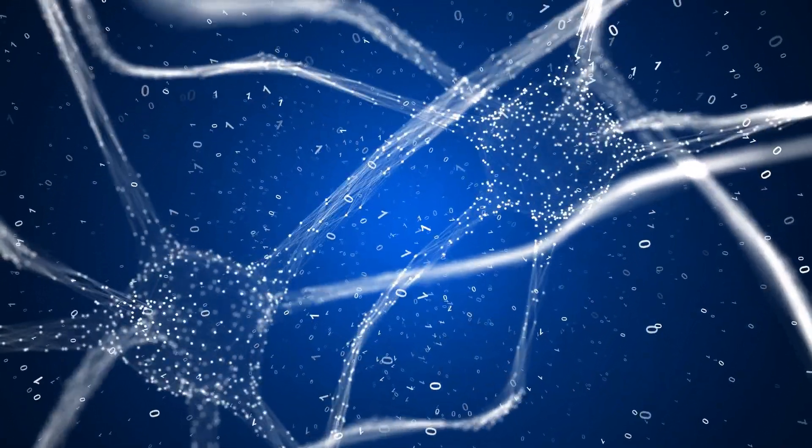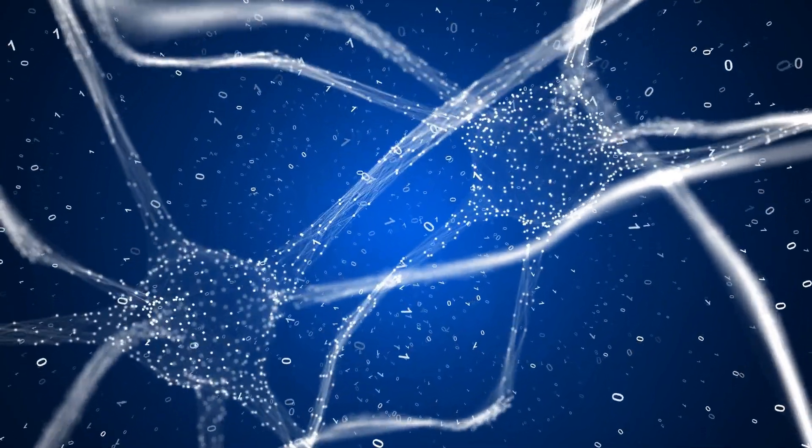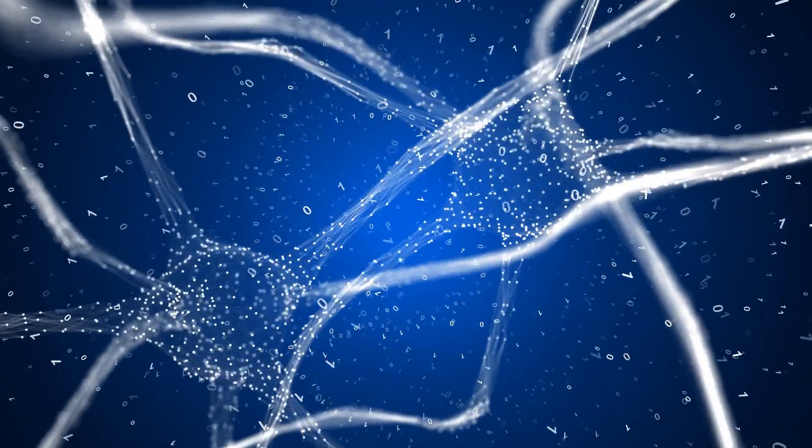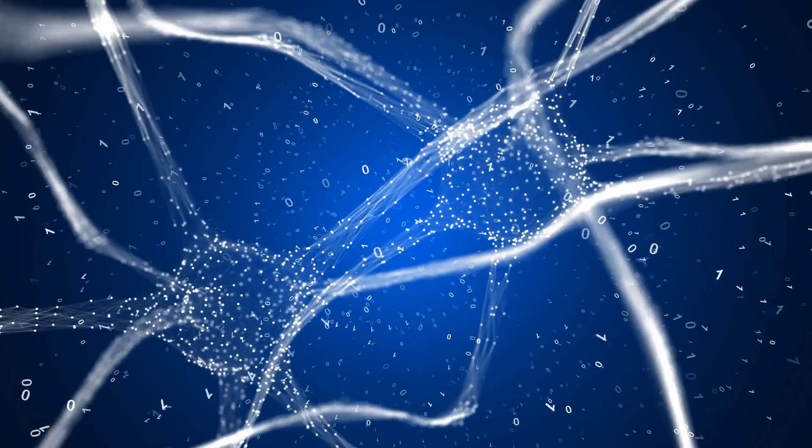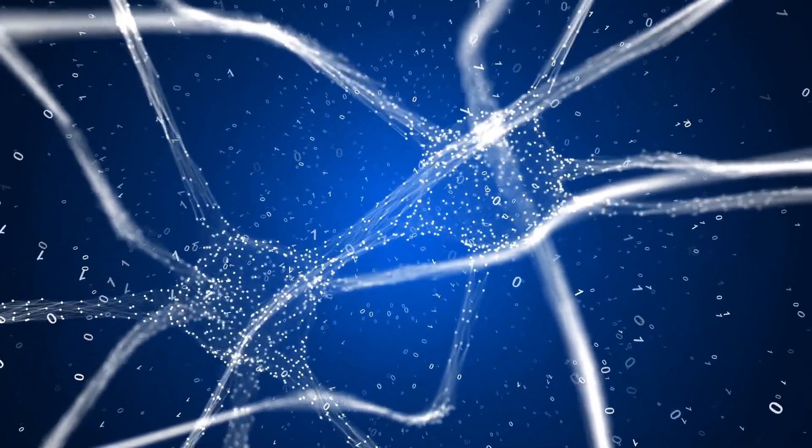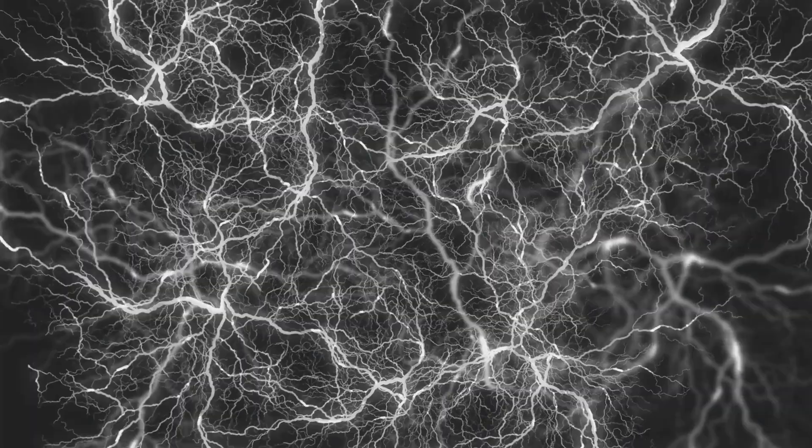Imagine the human brain, a complex network of billions of neurons. Each neuron is a specialized cell that transmits information through electrical and chemical signals. This intricate web of communication forms the basis of our thoughts, emotions, and actions.